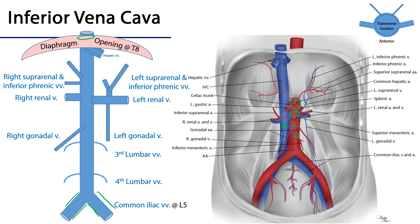The hepatic portal vein is going to conduct blood to hepatic sinusoids, and these sinusoids are going to be drained of blood through the hepatic veins.